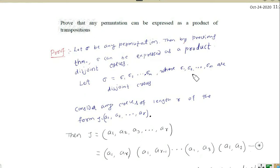Transpositions means cycles of length 2. The question is: prove that any permutation can be expressed as a product of transpositions. Proof: